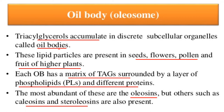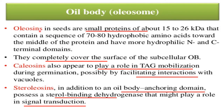Oil bodies, also called oleosomes, are discrete subcellular organelles where triacylglycerol accumulates. These lipid particles are present in seeds, flower pollen, and fruits of higher plants. Oil bodies have a matrix of triglycerides surrounded by a layer of phospholipid and different proteins — most of these are oleosin, but others such as caleosin and steroleosin are also present. Oleosin in seeds is a small protein of about 15 to 26 kiloDaltons.